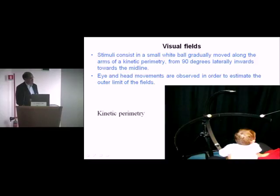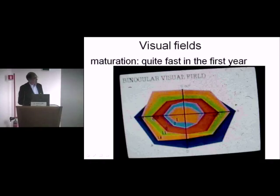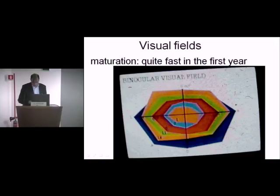This is the visual fields apparatus — a homemade apparatus. We need to acknowledge it was developed by Jacky Van Hof-van Duin. It is a very simple method, and even babies at one and two months will be able to participate. At one month, visual fields are quite restricted. As the child gets older — two months, six months, eleven months — the fields become much wider and more similar to adults.